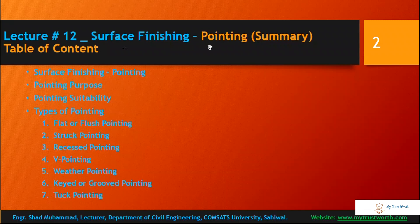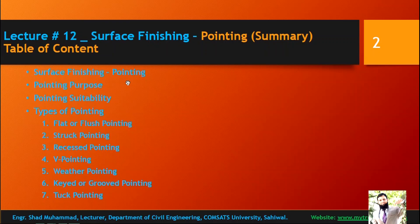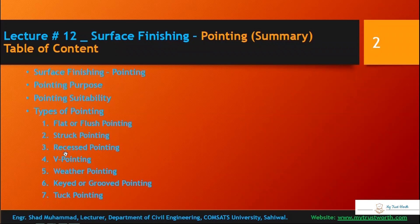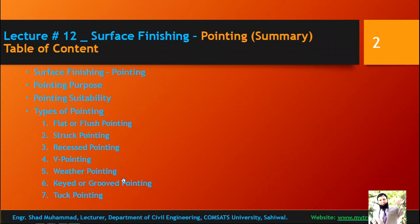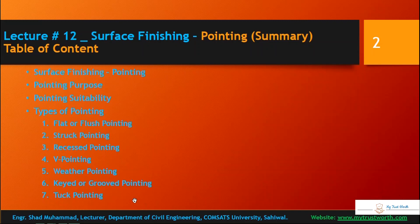Let's review what we studied in our previous lectures. Lecture 12 was related to surface finishing — specifically pointing. In lecture 11 we studied plastering. In lecture 12 we studied pointing: its purpose, suitability, technical terminologies, and seven different types — flat or flush pointing, struck pointing, recessed pointing, repointing, weather pointing, keyed or grooved pointing, and tuck pointing. The list of pointings is based on shape or texture, and types are not limited to these seven.